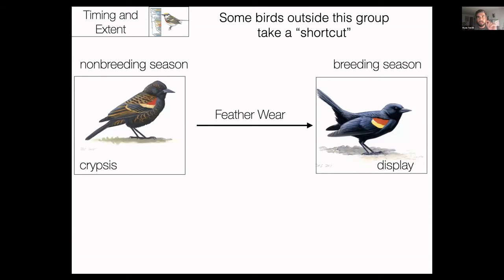Very few birds do a complete pre-alternate molt. Only three species replace every single feather on their body twice a year: bobolink, Franklin's gull, and willow warbler. All three are birds that migrate long distance and spend a lot of time in the open — breeding in open grasslands and wintering in deserts. That's a bit more evidence for how and why pre-alternate molt evolves.